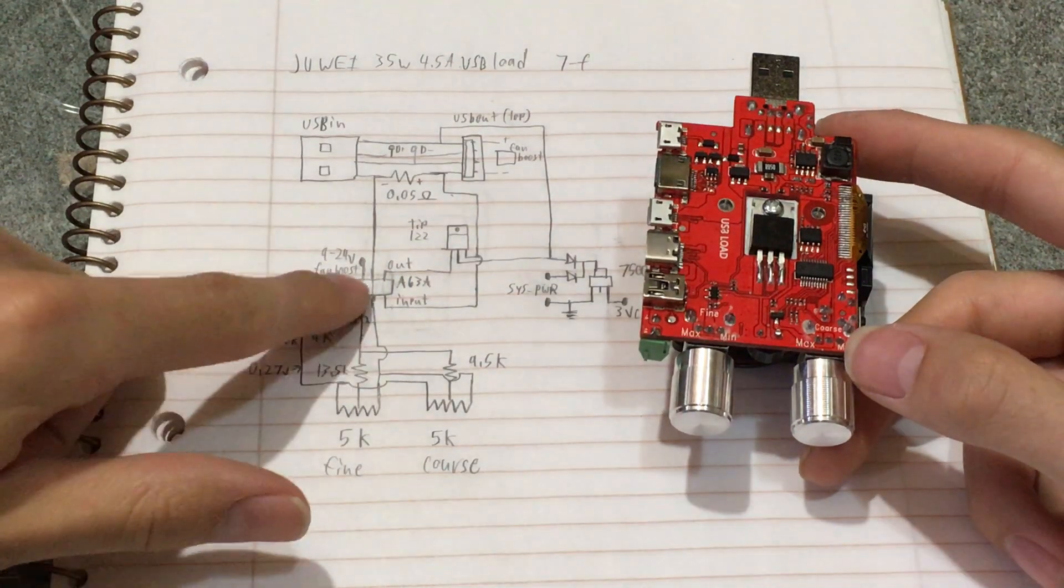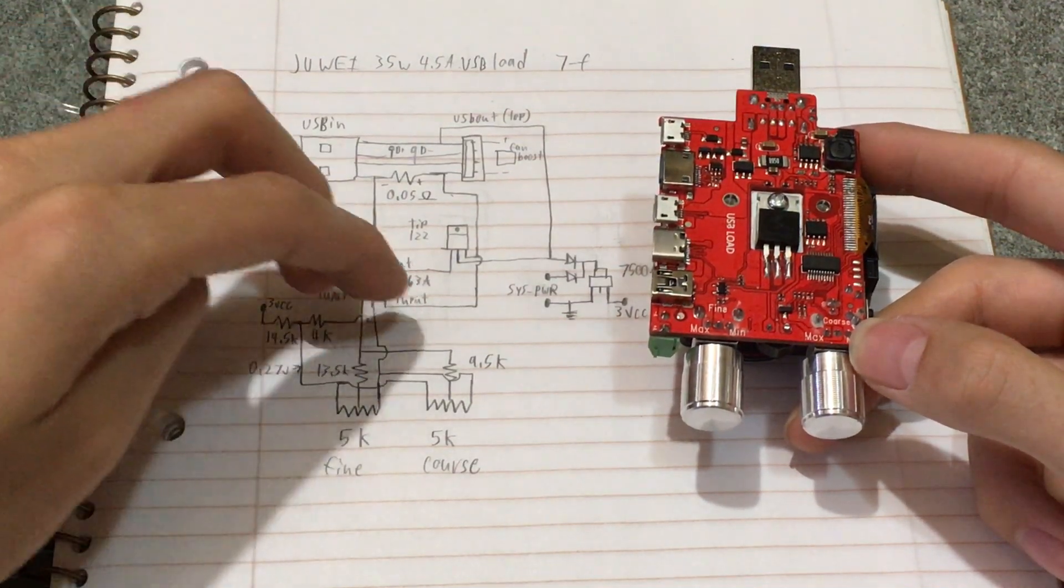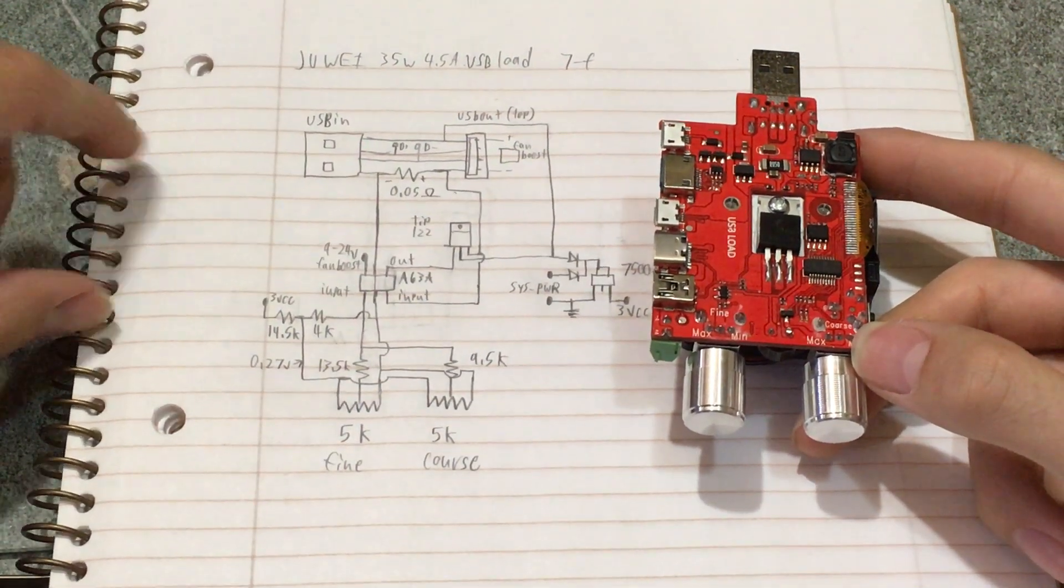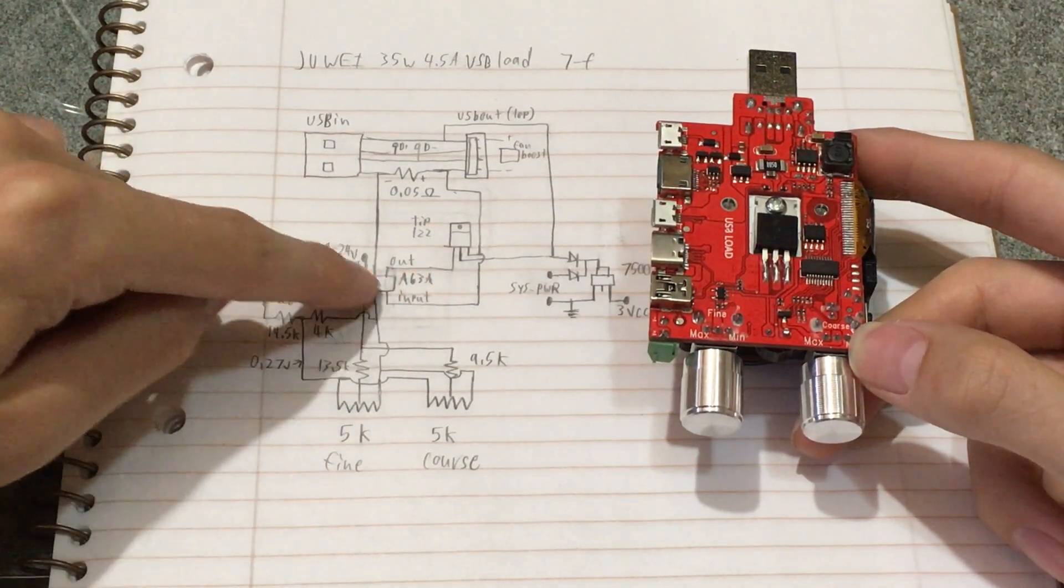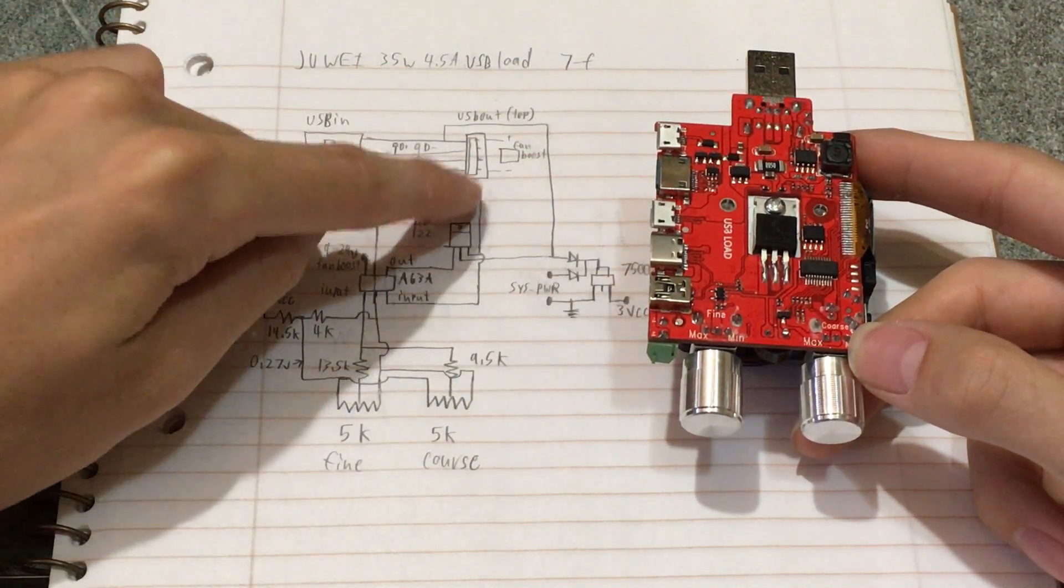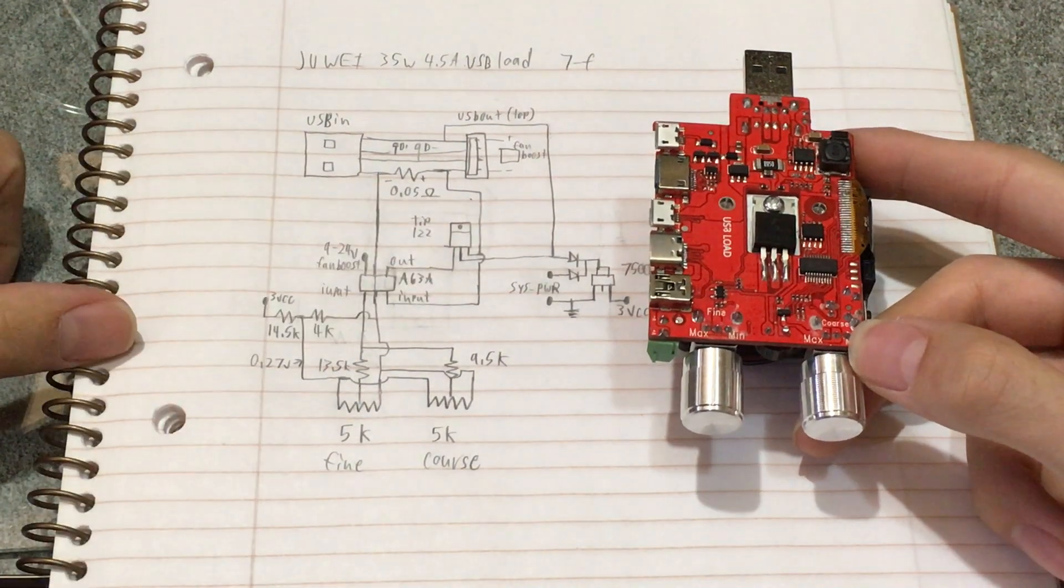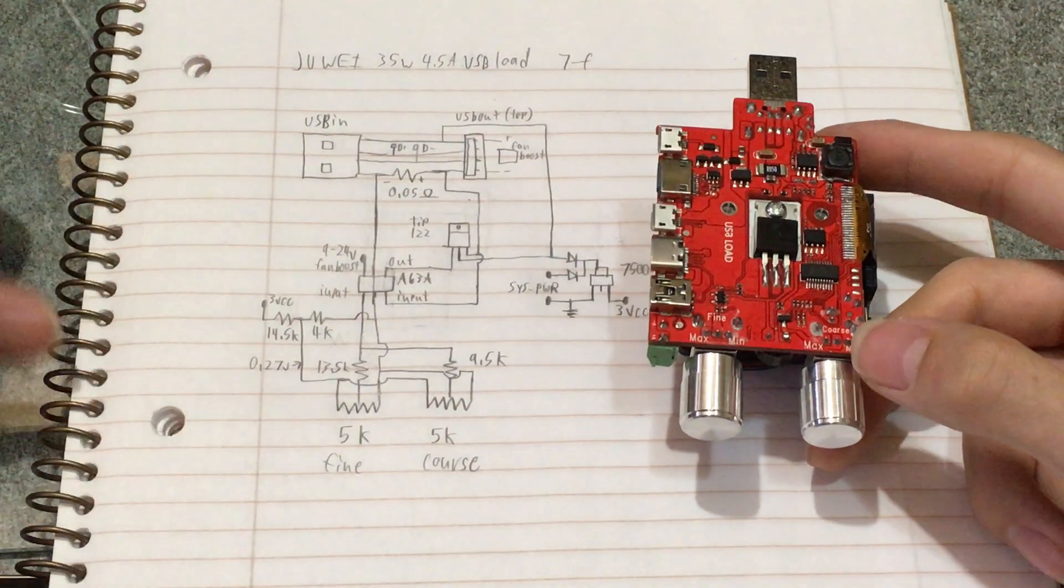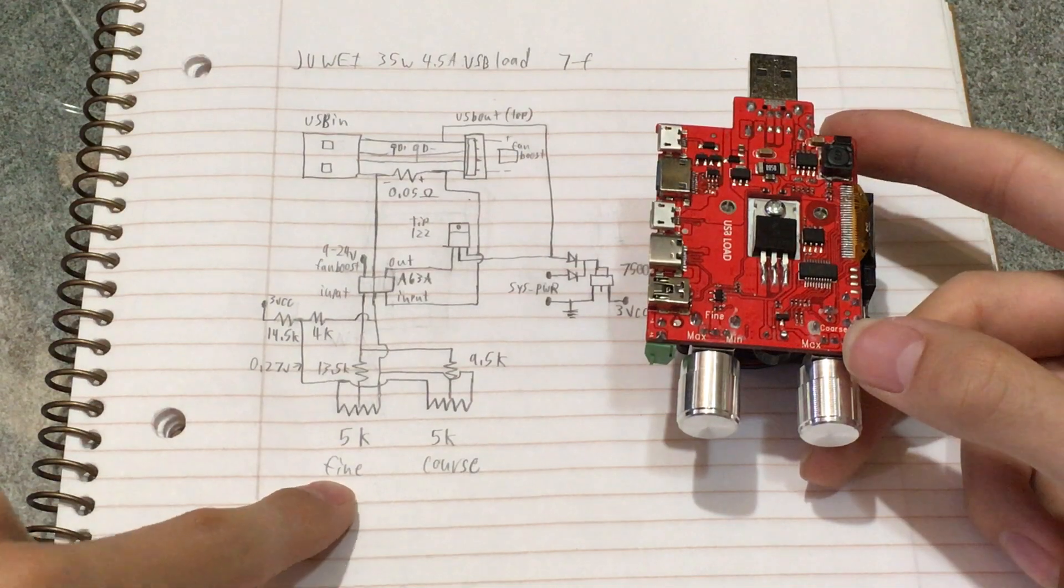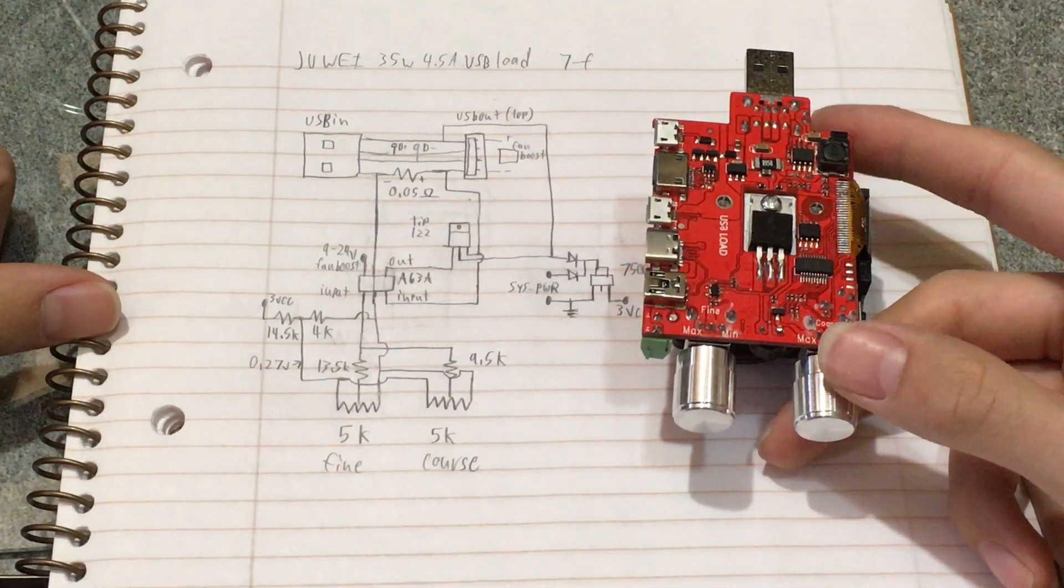And then this measures the current between or the voltage between these two and makes a match basically by putting an output signal to the transistor. So the higher voltage here and the lower voltage there, more output will be out here, this will turn on making current flow making this voltage rise so the differential will be less and so it'll lower the output on the base. So the whole feedback circuit. And yeah so fine and coarse adjustments there are just based on these two resistors that combine it.